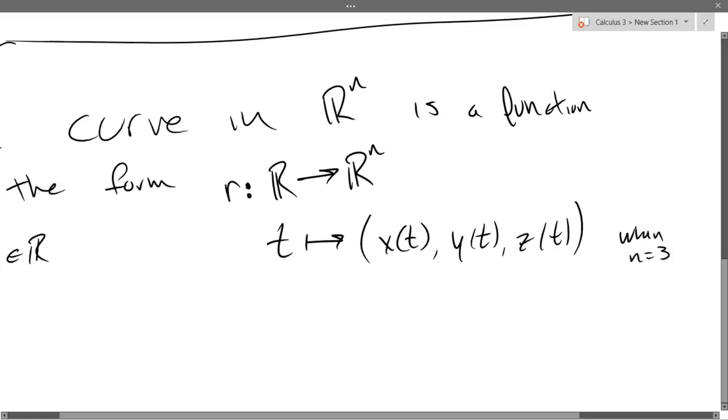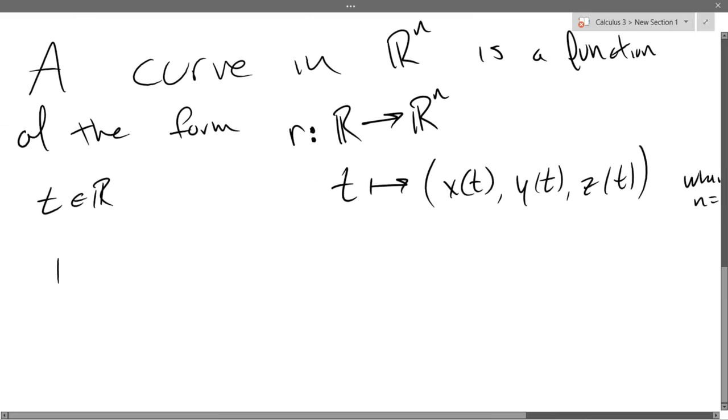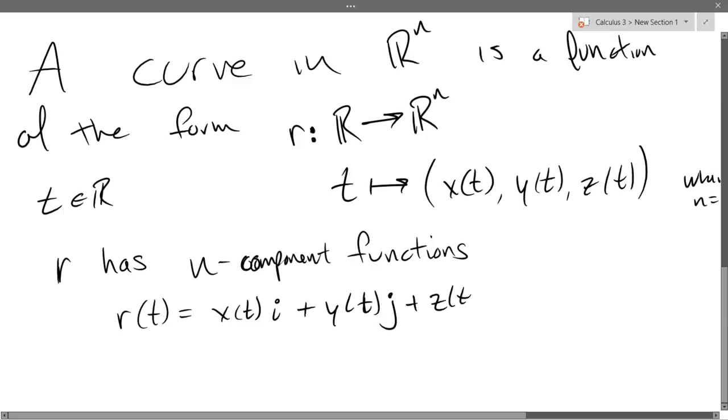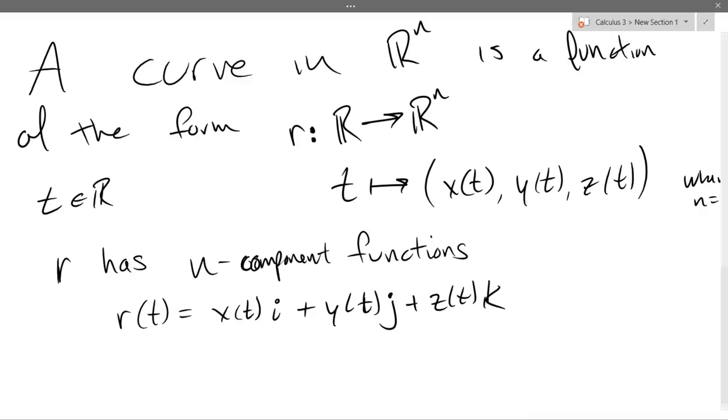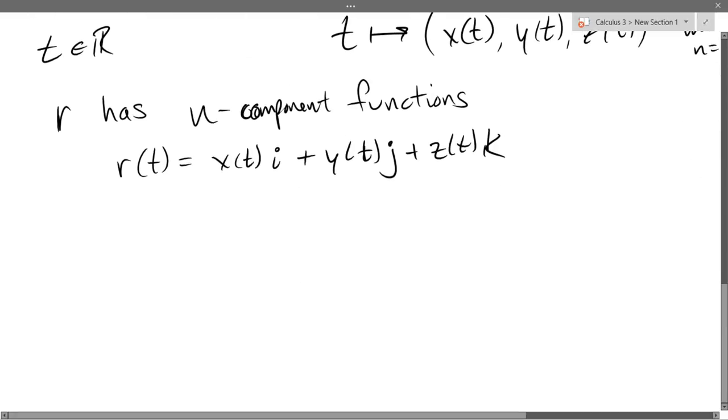There's three component functions, or in general, R has N component functions. Another way you could write R of T, you could write it as X of T I plus Y of T J plus Z of T K. So the I, J, K notation looks like that. I personally like to see just point or diamond bracket notation.